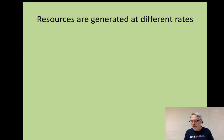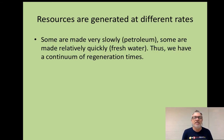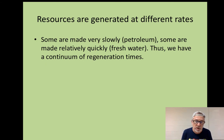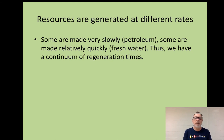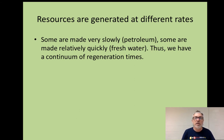The resources produced by the earth systems are regenerated at different rates. Some are made very slowly — petroleum, for example. Modern oil was made 300 to 400 million years ago, and it took a long time to be turned into petroleum. It's the remains of dead forests, dead plants, dead plankton. On the other hand, fresh water is generated really quickly. We can think of all of our resources and their regeneration times and realize there's a continuum of regeneration times from very quick to very long.